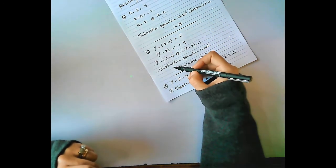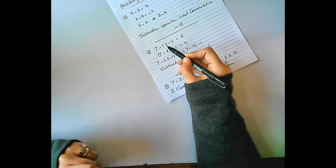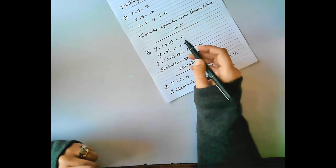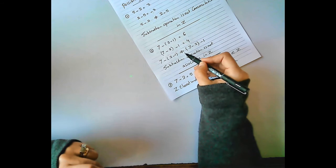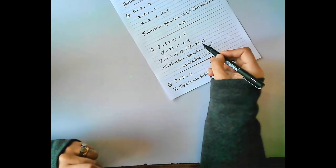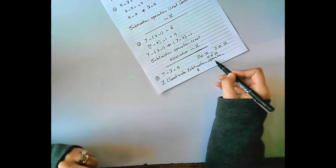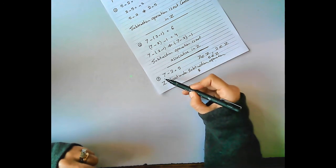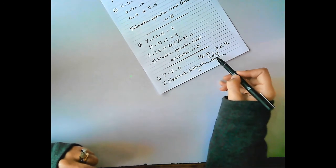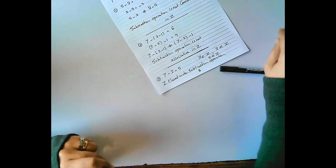Number 2: Subtraction operation is not associative in Z. Why? 7 minus (2 minus 1) equals 6, but (7 minus 2) minus 1 equals 4. So they are not equal. However, Z is closed under subtraction: 7 belongs to Z, 2 belongs to Z, and 7 minus 2 equals 5, which belongs to Z. Therefore Z is closed under subtraction.